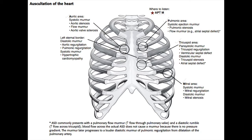Next we will discuss auscultation of the heart and the different listening posts for the different valve sounds. The aortic listening post, which you can see in the top right of the screen, is at the second intercostal space on the right sternal border. The aortic area is where you listen for systolic murmurs of aortic stenosis, as well as flow murmurs, which are commonly seen in patients that have anemia, and aortic valve sclerosis or calcification and hardening of the aortic valve.